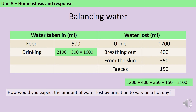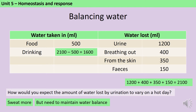Linked to this, you could be asked how you would expect the amount of water lost by urination to vary on a hot day. Lots of people lost the mark because they said if it's a hot day you'll drink loads and therefore urinate loads. Biologically, if it's hotter you're going to sweat more — and remember you need to say sweat more, not just sweat, because you are sweating a little bit at all times. So you're sweating more, and in order to maintain water balance, if you're sweating more you're going to urinate less.